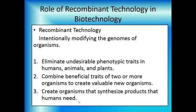Third goal: creating organisms that synthesize products that humans need. We've taken the human insulin gene and inserted it into E. coli, or sometimes into Saccharomyces, a yeast, and now they make human insulin in factories. We don't have to use extracted beef insulin or porcine pig insulin, and diabetics can get actual human insulin.